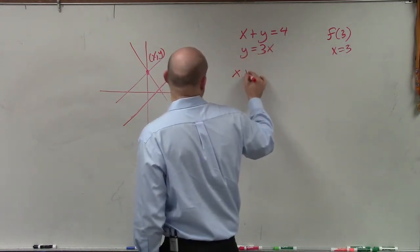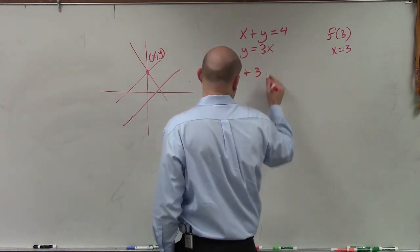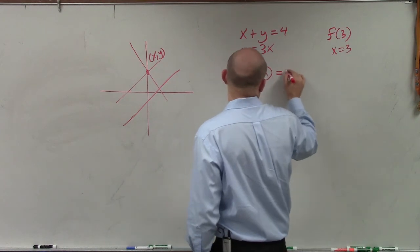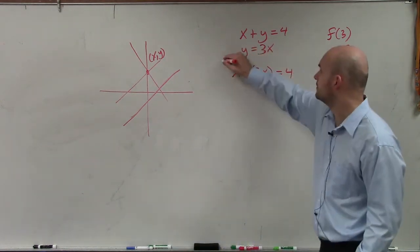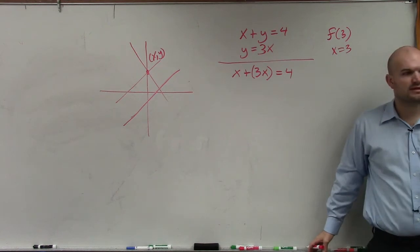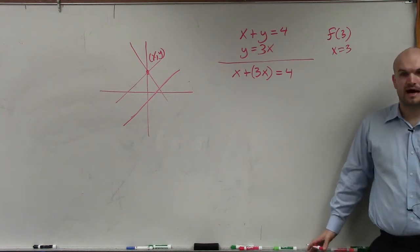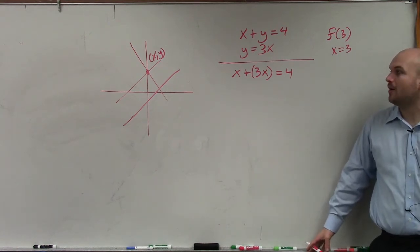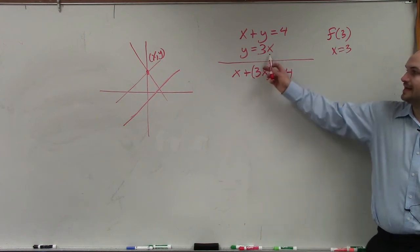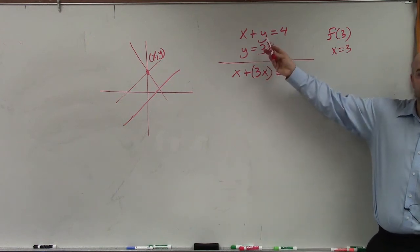So therefore, I have x plus 3x equals 4. Does everybody see what I did? I plugged in the value of y in the second equation into the first equation.